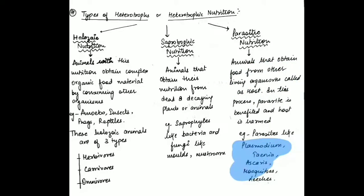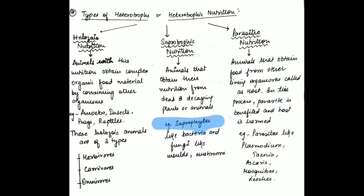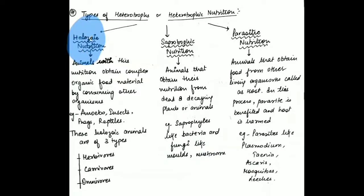Examples of parasites include plasmodium, tinea, ascaris, mosquito, and leeches. Examples of saprophytes include fungi, mushrooms, and molds. Examples of holozoic animals include amoeba, insects, frog, and reptiles, which eat other organisms as a complete whole. So heterotrophic nutrition is of three types: holozoic, saprophytic, and parasitic.